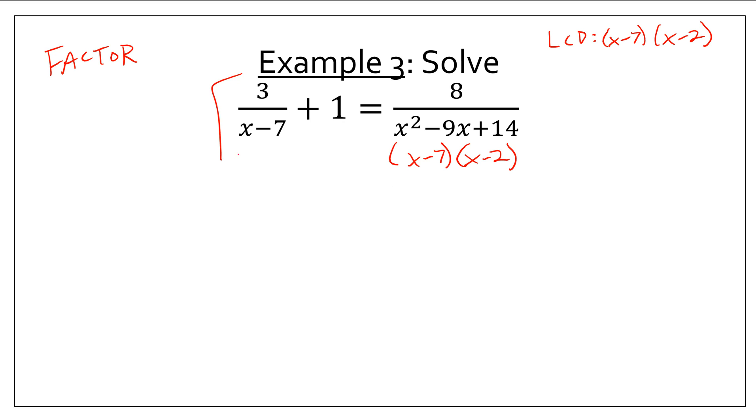So, let's multiply everything by x minus 7 times x minus 2. And again, I'm going to put it over 1 just to help you remember that this is happening on top of the fraction. And let's see if we can cancel without showing work. When I multiply this to the first fraction, what cancels? Oh, the x minus 7s cancel. What am I left with? 3 and x minus 2. So, 3 times x minus 2. Easy.